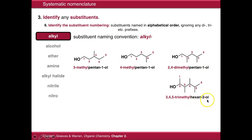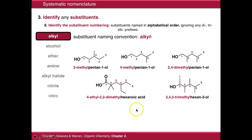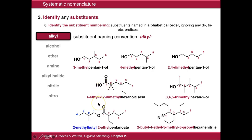Here's a slightly more complicated example: 4-ethyl-2,2-dimethylhexanoic acid. And here are some more complicated examples showing how you incorporate substituents into the yl-oate ester system that we saw before.